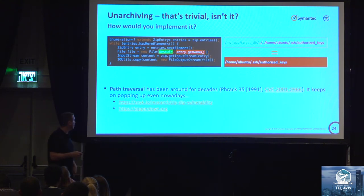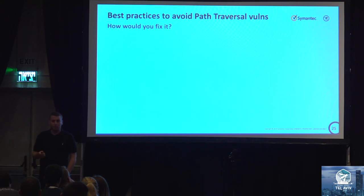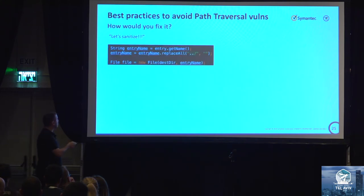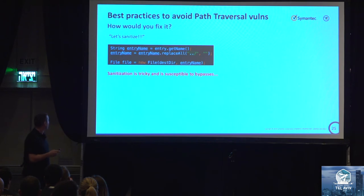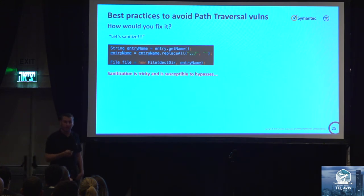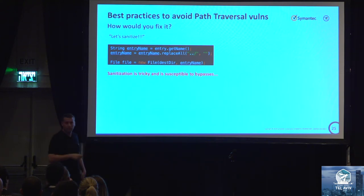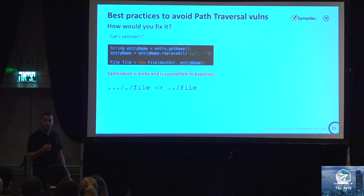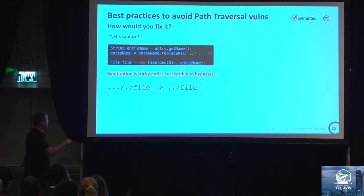How can we fix it? The common approach in application security is to say dot-dot-slash is not legitimate, just wipe it away. But sanitizing input is very hard to implement and easy to bypass. A simple example: the attacker creates an invalid path in the zip file that by itself won't work, but thanks to the sanitization, it gets transformed into a valid path traversal attack. This shows why naive string sanitization is so problematic.